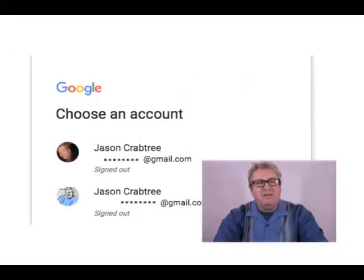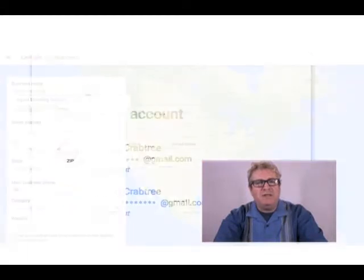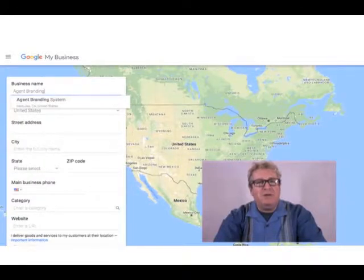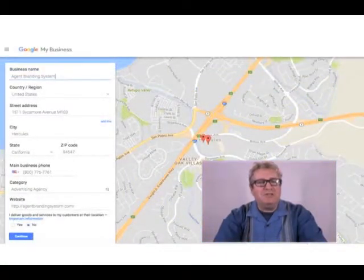It'll ask you to sign in. Google may already know a few of your email addresses that you've used to work on business profiles in the past. If it doesn't know yours, you can just type it in. Once you're signed in it'll take you to a page asking you to look for the business you want to manage. I started typing in Agent Branding System and they already had that business information, so I just clicked on the name to auto-populate and hit Continue.